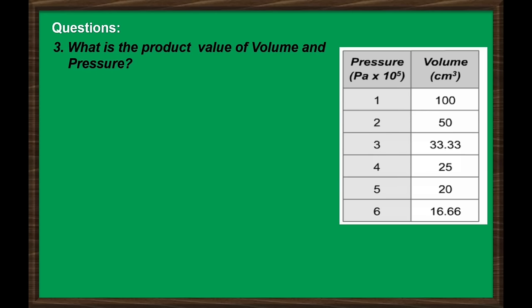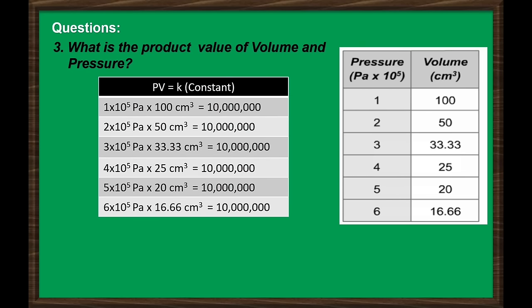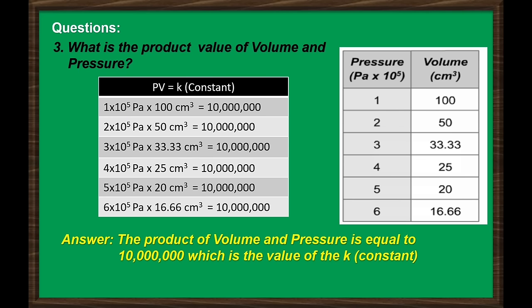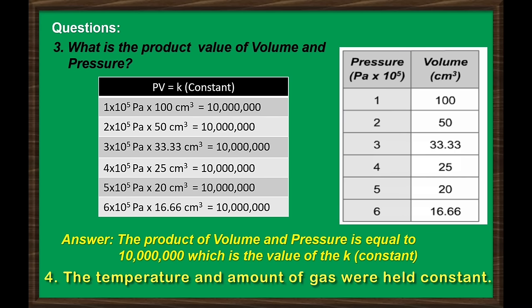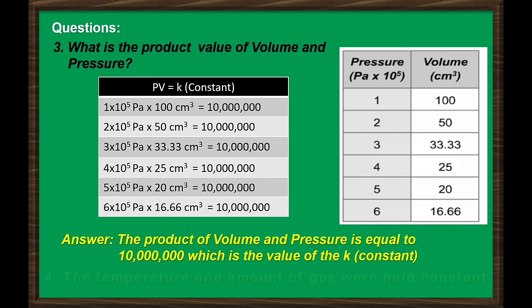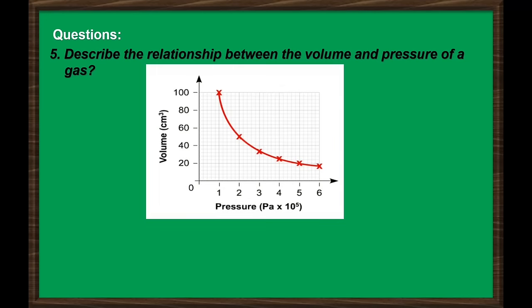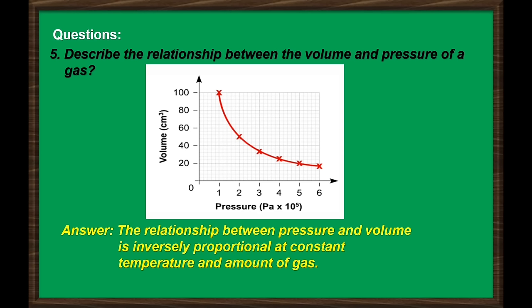For the third question — what is the product value of volume and pressure? — observe the product of each pressure and volume. The product of each volume and pressure is equal to 10 million, which is the value of the K constant. For question number 4, the temperature and the amount of gas were held constant. And lastly, for number 5, based on the graph, the relationship between pressure and volume is inversely proportional at constant temperature and amount of gas — meaning as pressure increases, the volume will decrease, and vice versa.